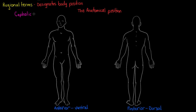The first region we're going to look at is called the cephalic region, and this just refers to your whole head. So drawing that in here — the cephalic region is going to include your head, your ears, every part of your head: eyes, nose, mouth, chin. That's all known as your cephalic region, and just on the back of the head here too.